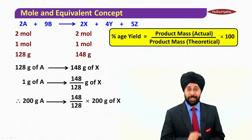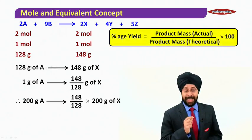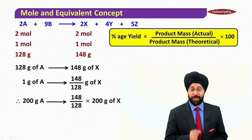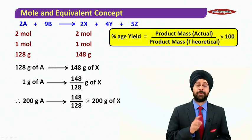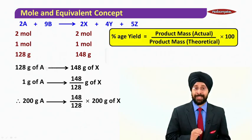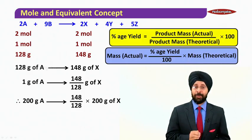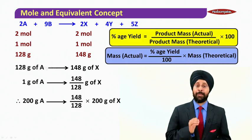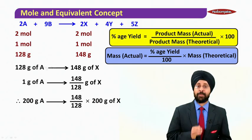Now since percentage yield equals product mass actual divided by product mass theoretical times 100, let's rearrange this equation because we need mass actual. So we can write it down as mass actual equals percentage yield by 100 times mass theoretical.